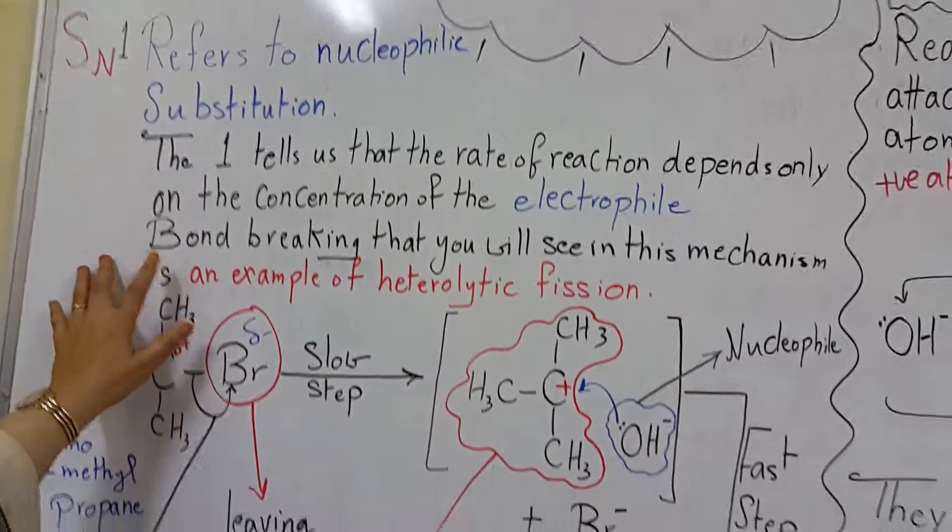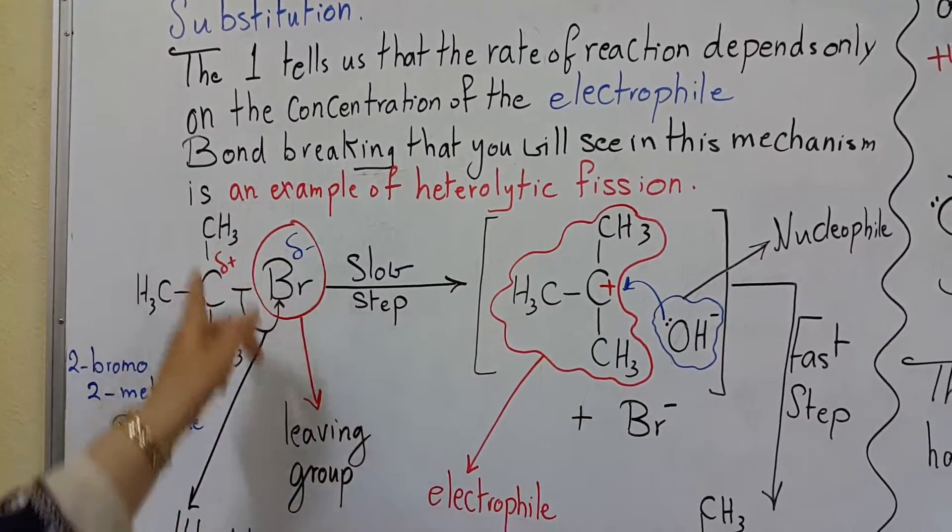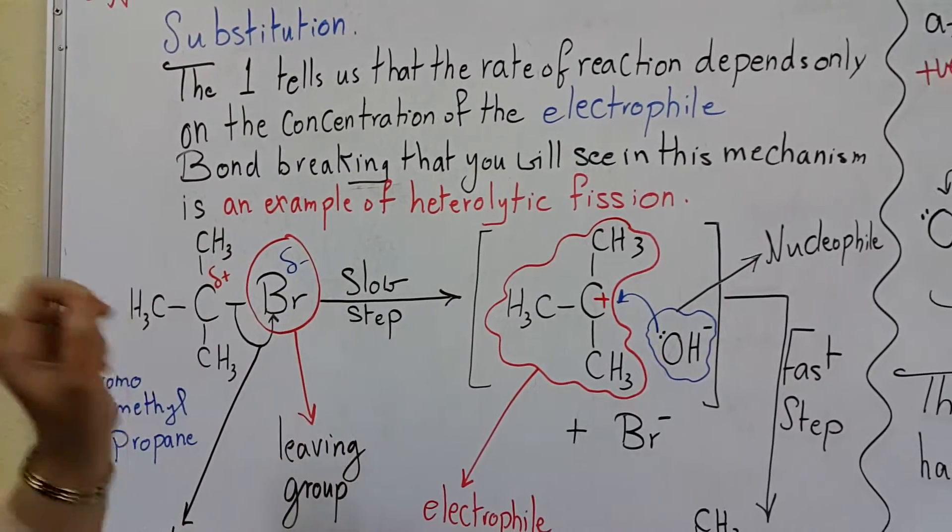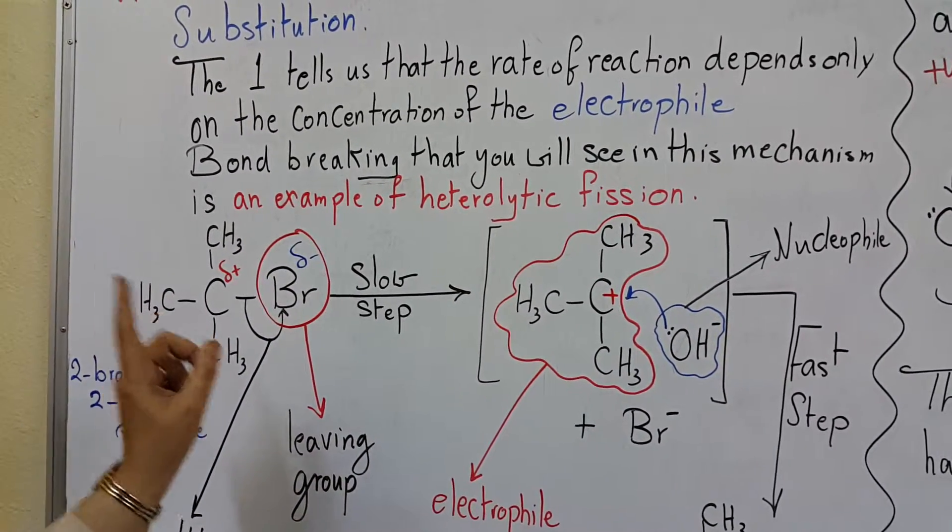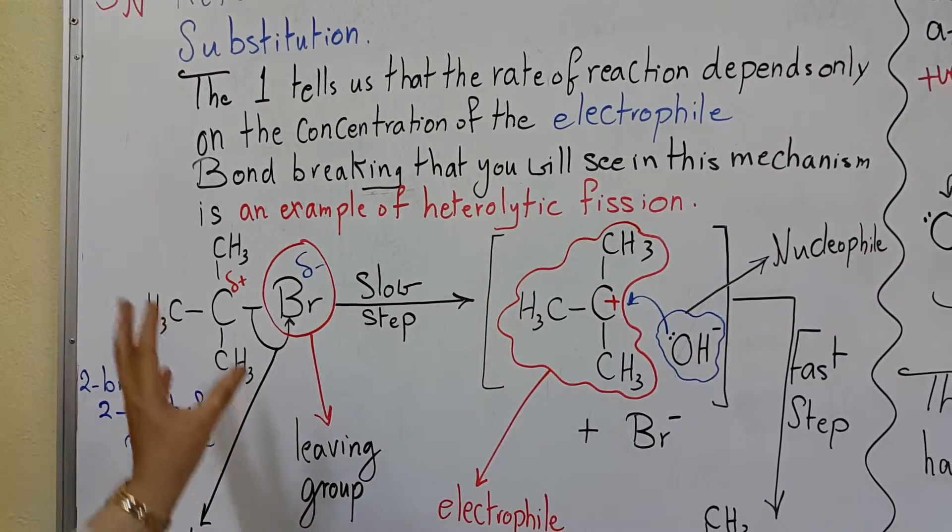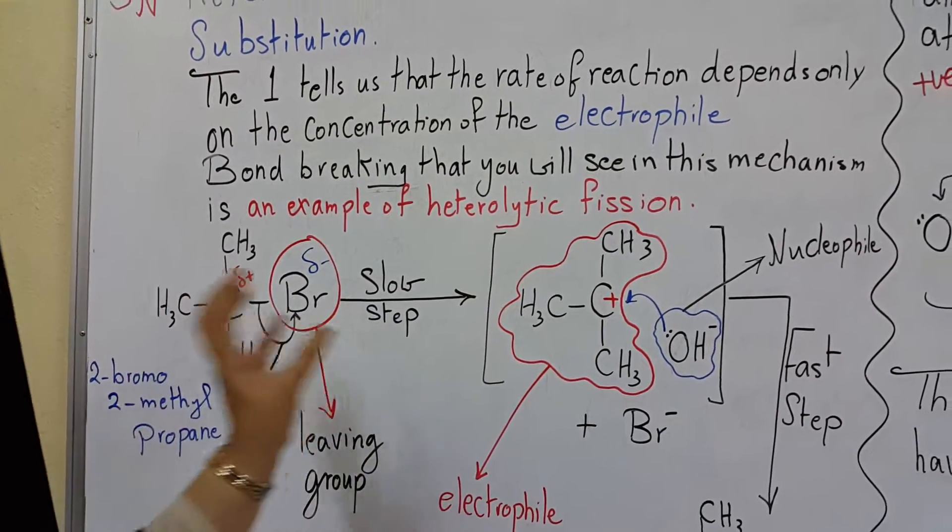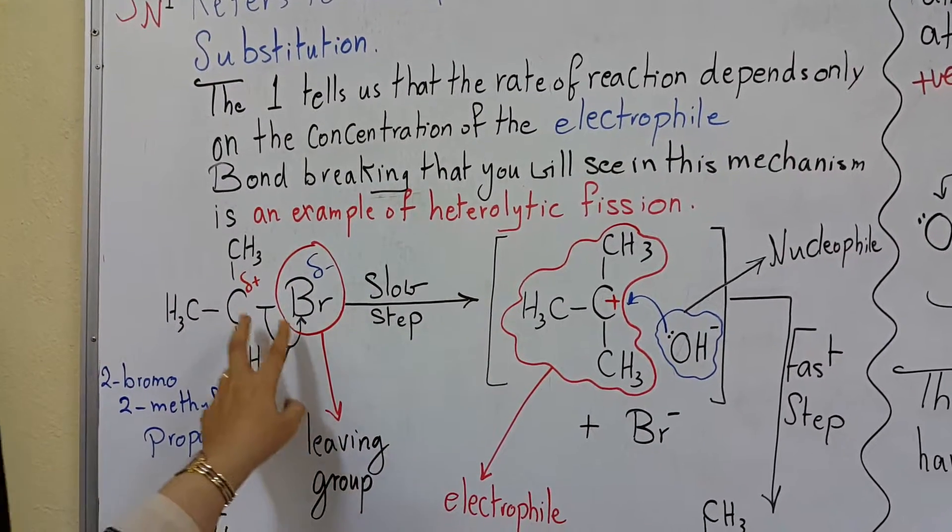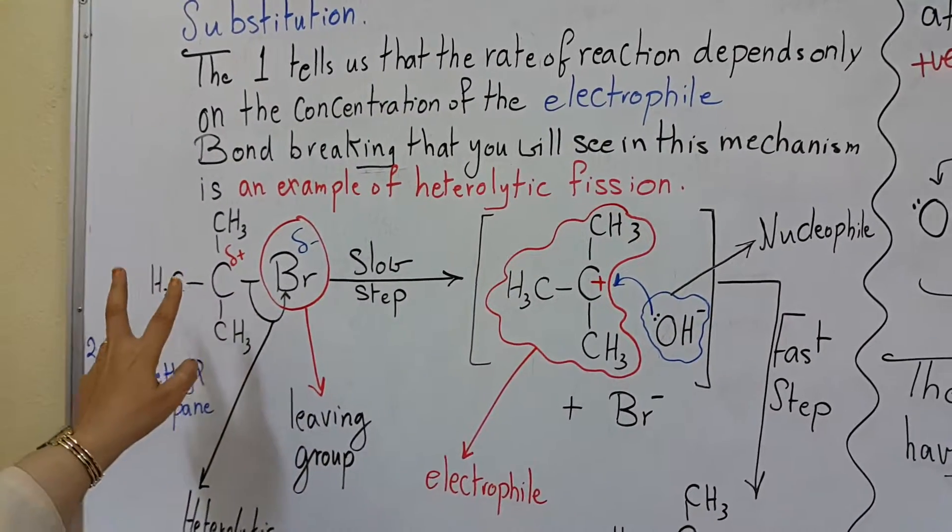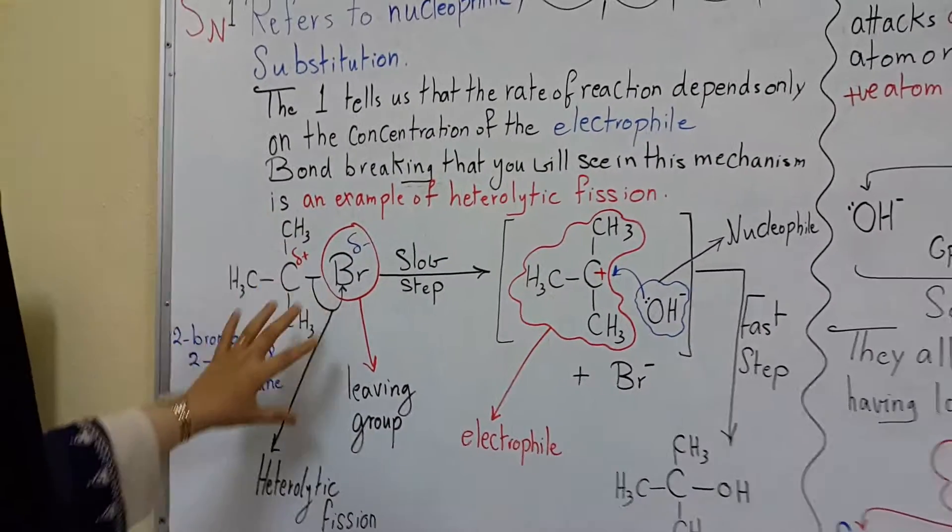Bond breaking will happen during the reaction, and this bond breaking is heterolytic fission—unequal bond breaking. One atom or group will leave with both electrons involved in the bonding. This is a tertiary haloalkane.